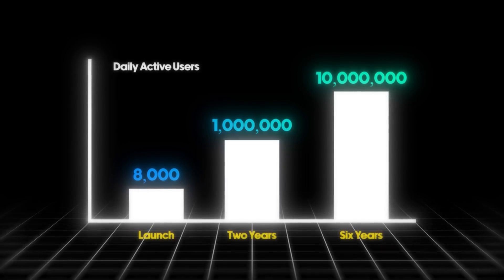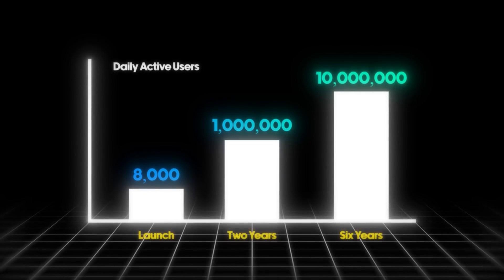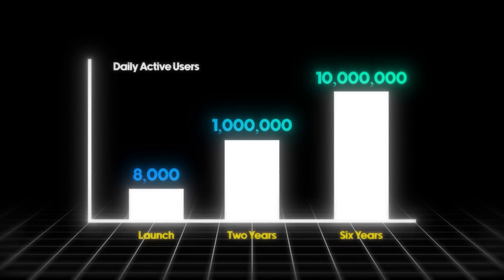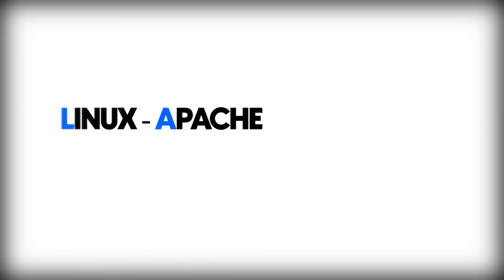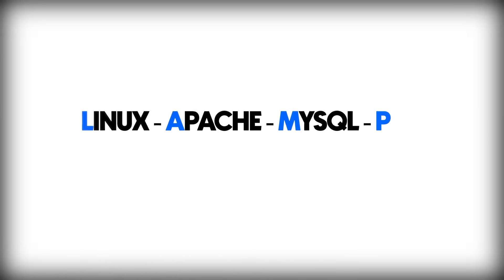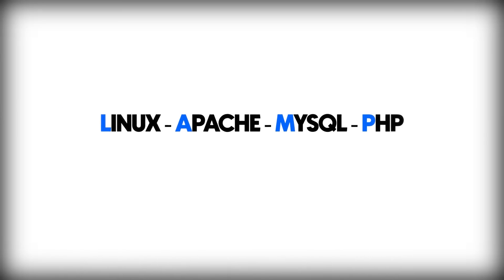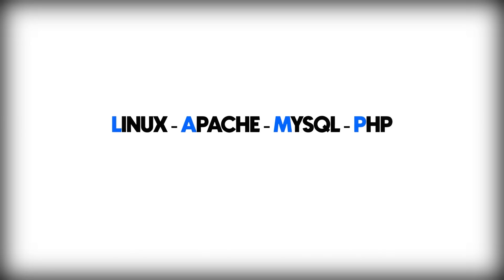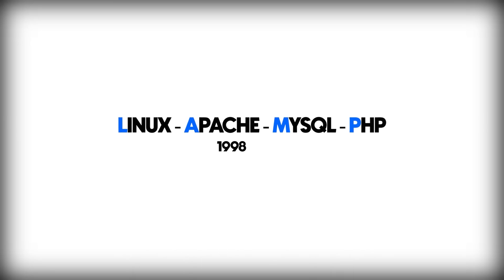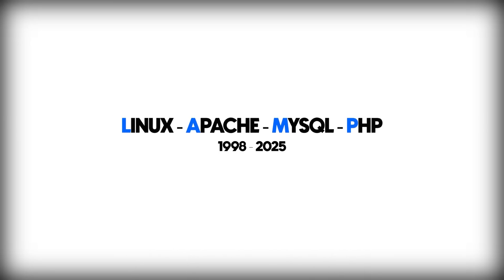It was humble origins. Believe it or not, Slack started as a simple LAMP application — Linux, Apache, MySQL, PHP, Python, or Perl. This stack still is one of the most popular ways to make web applications to this day.